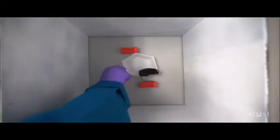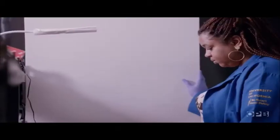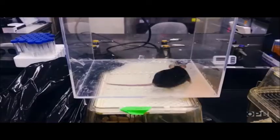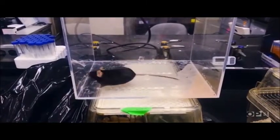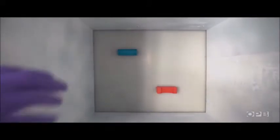You put a mouse in an environment and present two objects. In this case, two orange blocks. The mouse spends time getting familiar with them. After that, we take them out and sleep-deprive them for six hours. While the mouse is kept awake, one of the orange blocks is replaced with a new object, a blue cylinder.